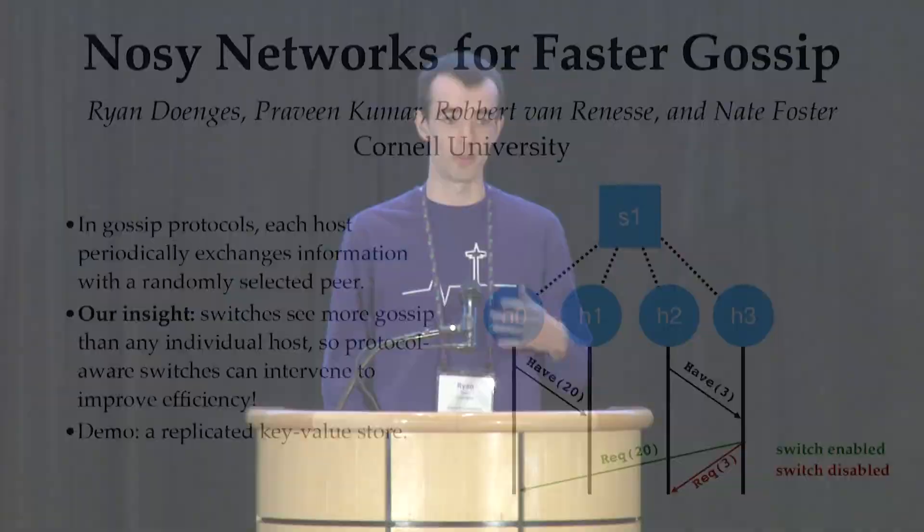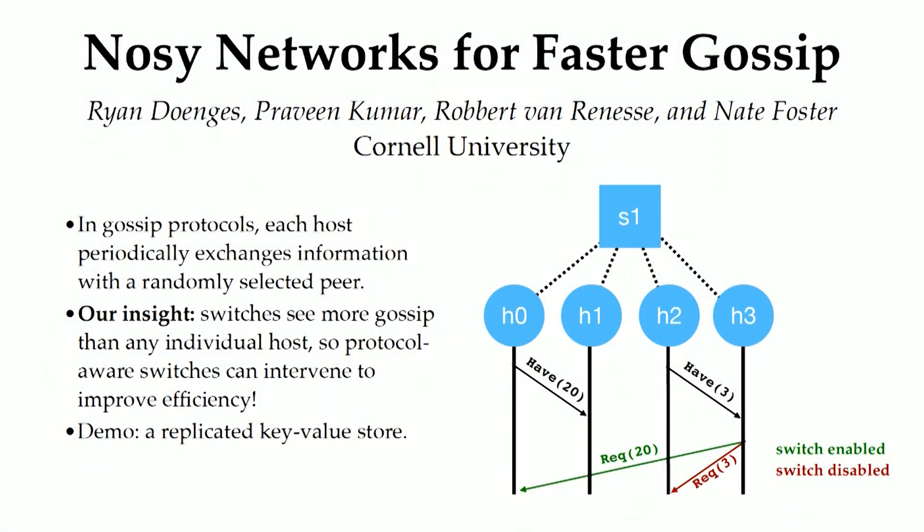I'm Ryan Dengis from Cornell. I'm a PhD student there. My demo is about gossip protocols. These are widely used for database replication, failure detection, and all kinds of things. The idea is that each host in the protocol will occasionally randomly contact a peer and exchange some information. This makes it really robust because it's randomized — you don't depend on a tree structure that always has to be maintained. You just dial a random number and see if they heard about something.